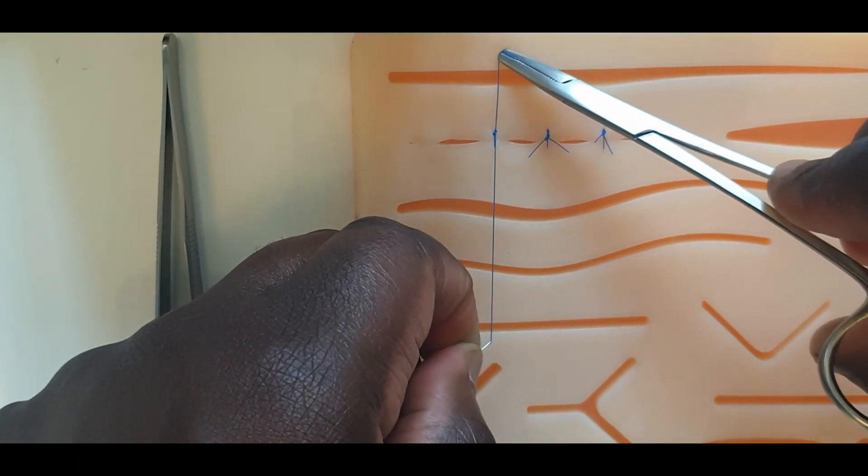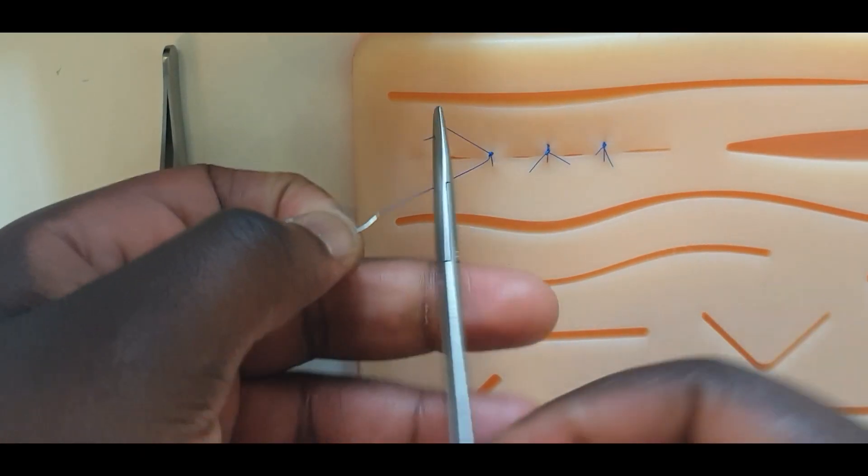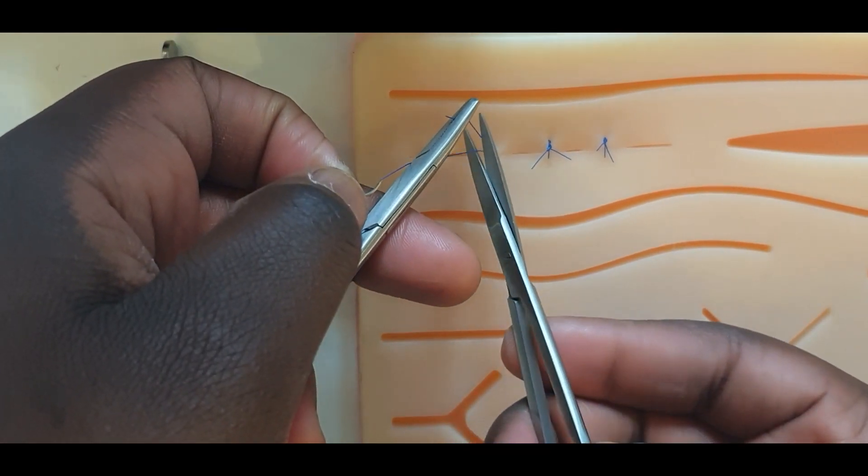It is during the third knot that the suture threads are laid to alternating positions.